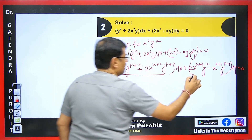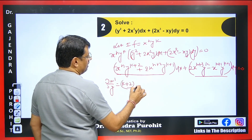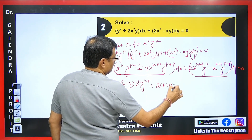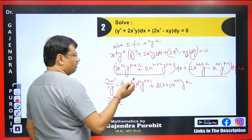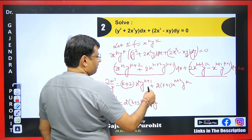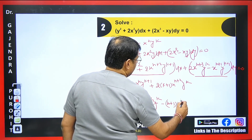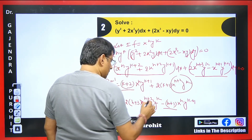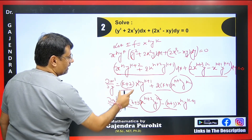We call the new M term M' and the new N term N'. Differentiating M' with respect to y gives (k+2) · x^h · y^(k+1) + 2(k+1) · x^(h+2) · y^k. Differentiating N' with respect to x gives 2(h+3) · x^(h+2) · y^k − (h+1) · x^h · y^(k+1). For exactness these must be equal, so we equate coefficients of matching terms — the coefficient of x^h · y^(k+1) on one side must equal that on the other, and similarly for x^(h+2) · y^k.